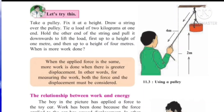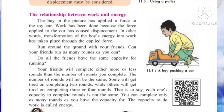Now the next part: relationship between work and energy. We have to see what is the relation between work and energy. Here one example — a boy in the picture has applied a force to a toy car as he is playing. As the boy applies force, the car gets displaced, meaning the car changes its position. So we can say work has been done. How is that work done? There is a transformation of the boy's energy into work — a transformation of energy from the boy to the car. As the energy is transferred in the form of force, the car gets displaced, and as the car gets displaced, work is done.